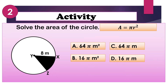Next, we are going to solve for the area of the circle. We still have circle Y, and the length of the radius is 8 meters. What is the area of the circle using A equals pi R squared? Is it A) 64 pi meters squared, B) 16 pi meters squared, C) 64 pi meters, or D) 16 pi meters? The answer is A, 64 pi square meters.